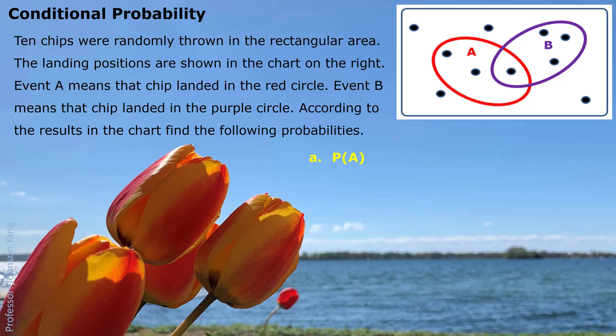Part A: Probability of A. With this experiment result, how much chance did the chips land in the red circle? We can see total we have 10 chips, and 3 of them landed in the red circle. This gives us the empirical probability — we calculate probability based on historical data, based on the observed result. So probability of A is 3 out of 10, which is 30% or 0.3.